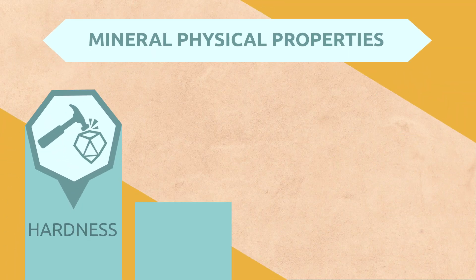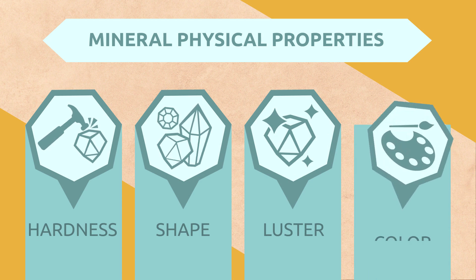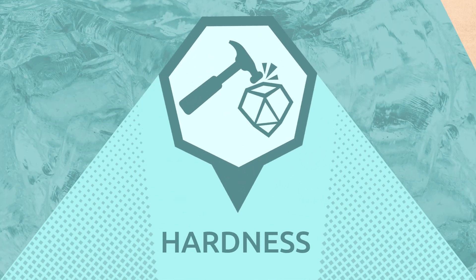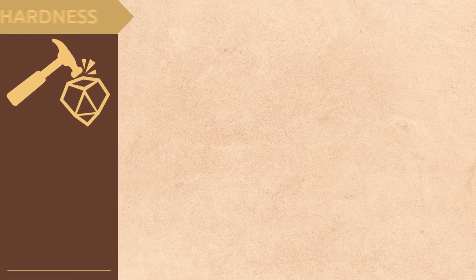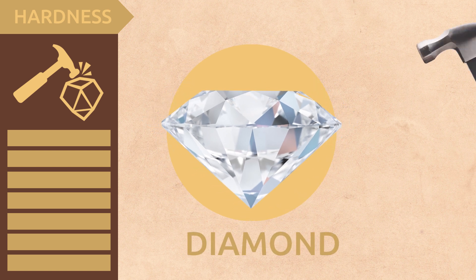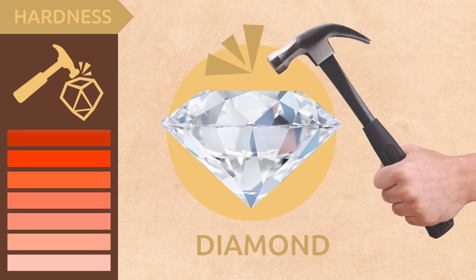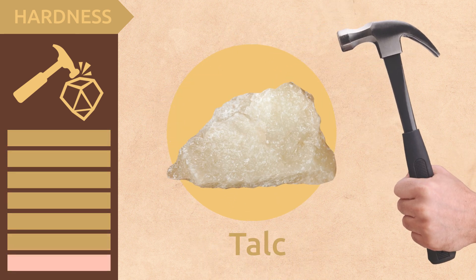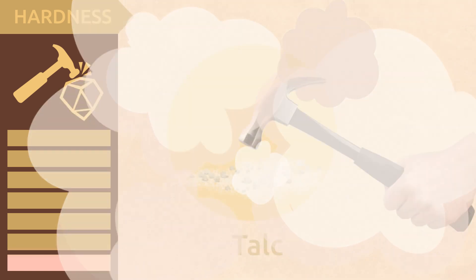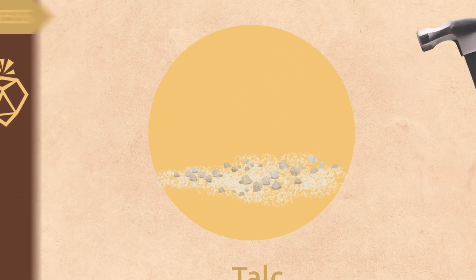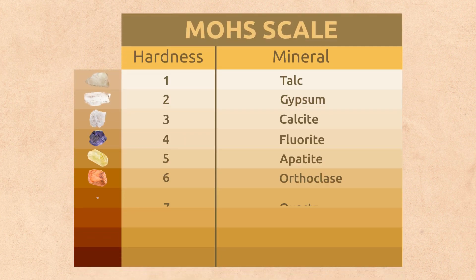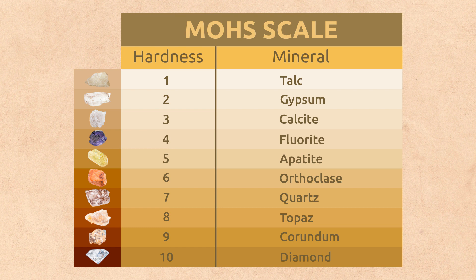Hardness, shape, luster, and color. Hardness: hard minerals are very difficult to scratch or break — diamonds are very hard minerals. But talc is a soft mineral. The Mohs scale describes 10 minerals based on their hardness, arranging them from softest to hardest.